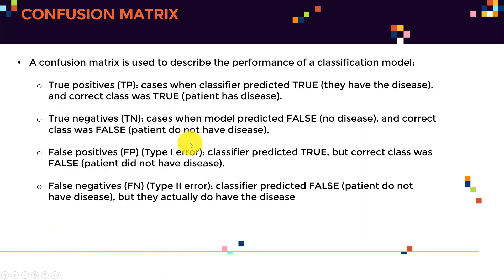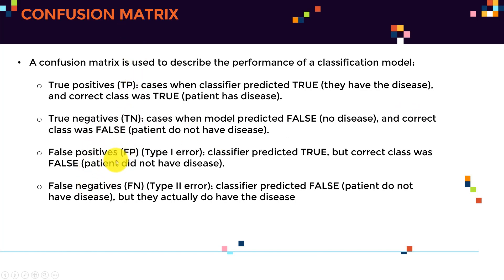So let's take a look at the definitions again. True positives: cases when the classifier predicted true — the patient had cancer or a disease — and the correct class was actually true. True negatives: when the model predicted false and in reality the patient was disease free. False positives are type one error: the classifier predicted true but the correct class was actually false. And false negatives are type two error: the classifier predicted false, saying the patient does not have a disease, but they actually do in reality.